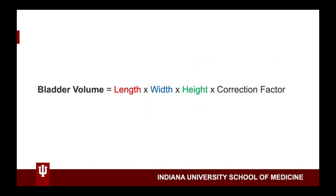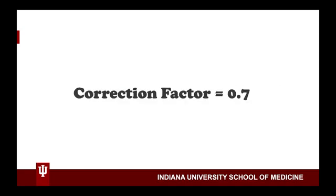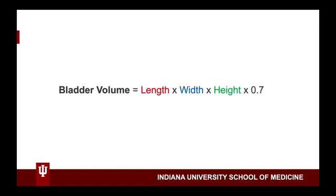Given these limitations, we are going to use the following formula to measure bladder volume. We are going to measure the length, the width, and the height. While there are many different correction factors that have been derived by different means, we are going to use the most common accepted correction factor of 0.7. Therefore, the formula we will use is length times height times width times 0.7. We will use measurements in centimeters, and thus derive our volume in cubic centimeters, or cc's.